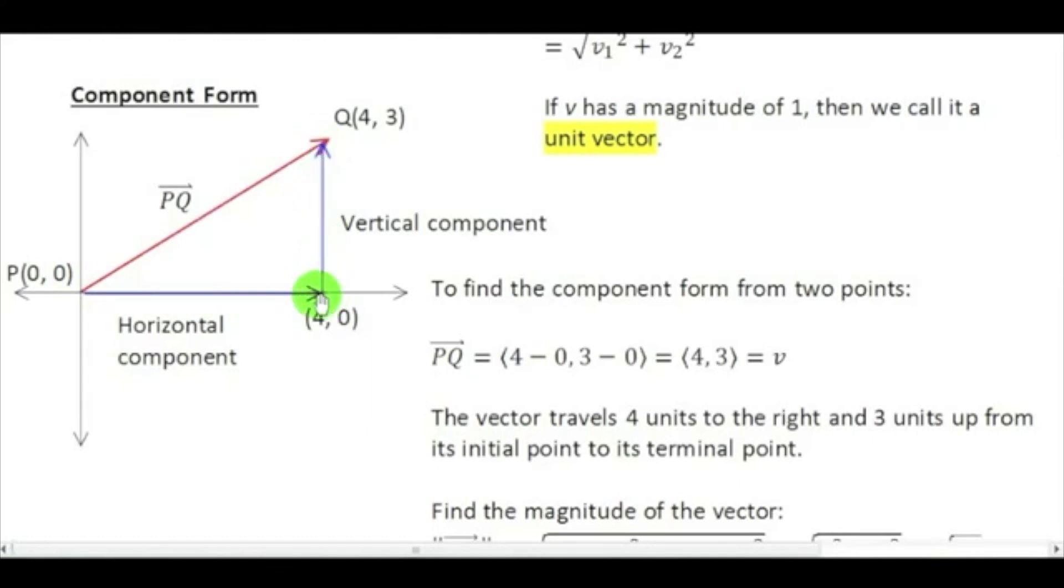I have to travel from four, zero, all the way up to four, three, so that makes this distance of the blue vector three units. Therefore, I get to my vector four, three, by traveling four units to the right, three units up. If I were to have a negative component, that would mean either I'm traveling left or down.